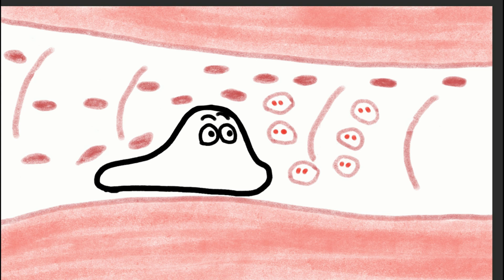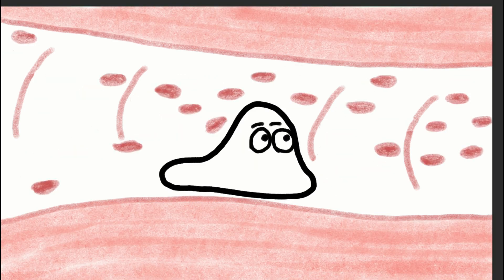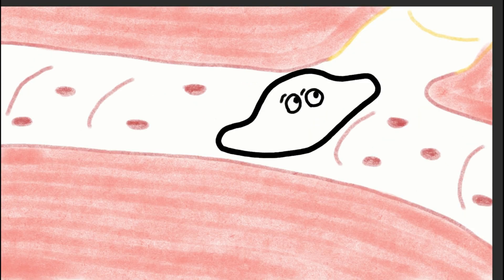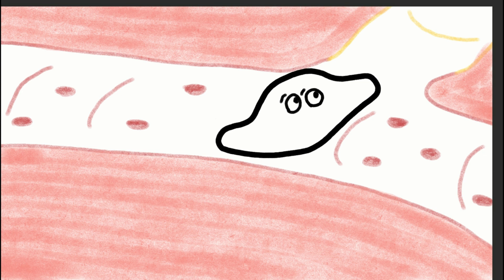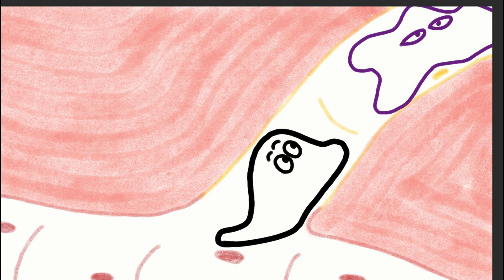So then the T cell moves further down the blood vessel and encounters a duct. Okay, this must be it. This must be how I get to the lymph node. And so he starts to move into the duct and encounters this huge cell, another very strange cell. And this one is called a macrophage and sees him eating something.